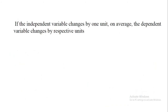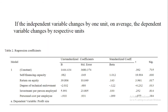If the independent variable changes by 1 unit on average, the dependent variable changes by the respective units. For example, if we look at the second independent variable — return on equity — a 1% or 1 unit change in return on equity will cause a 14.3% change in the dependent variable. Or if we look at the fourth variable — investment per person employed — a 1 unit change will cause about 3% change in the dependent variable.